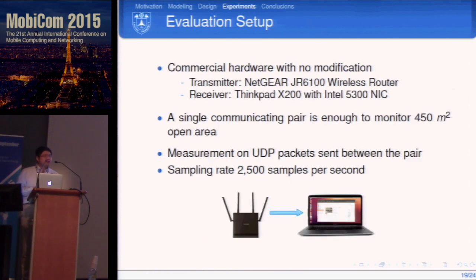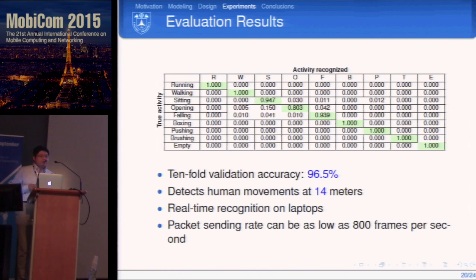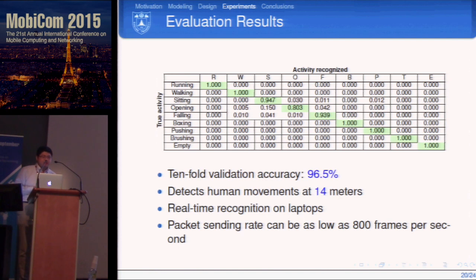For evaluation, we implemented our system using commercial Wi-Fi routers and laptops, operating in real time by transmitting UDP packets from sender to receiver and sampling CSI at 2,500 samples per second. The ten-fold cross-validation accuracy across eight activities is higher than 96%. One sender-receiver pair can detect movement at up to 14 meters away, enabling coverage of a very large room — around 400 square meters.